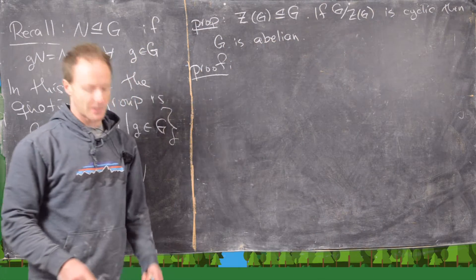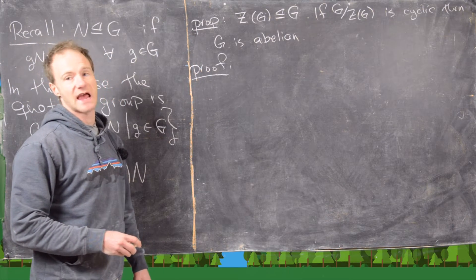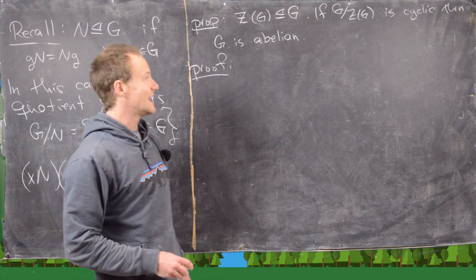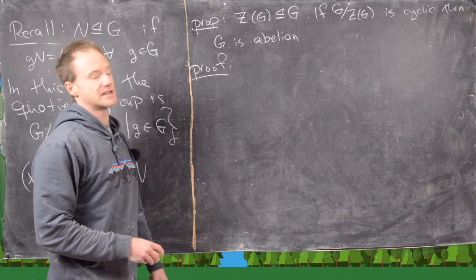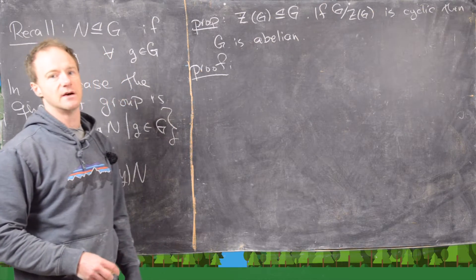So the proposition we want to prove here starts off with that the center of the group is a normal subgroup of the group. And also, if G mod the center, in other words that quotient group is cyclic, then the group itself is abelian.